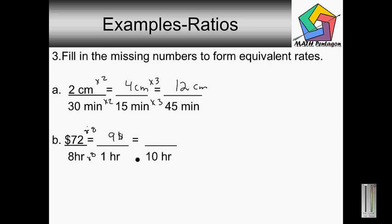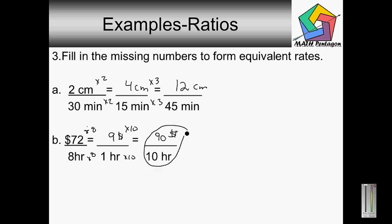One goes into ten how many times? Ten times. And then we multiply ten on the top as well — nine times ten is ninety. So we have ninety dollars over ten hours as our final answer to this problem right here, as you can see.